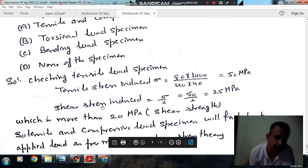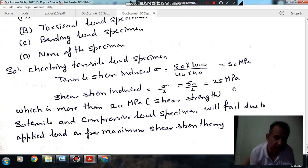According to Tresca theory, the shear stress induced is σ/2, so that is 50/2, which equals 25 MPa.